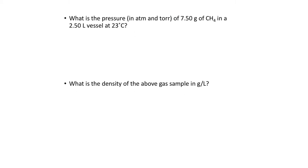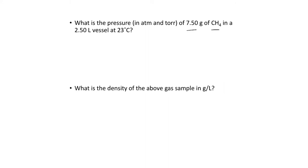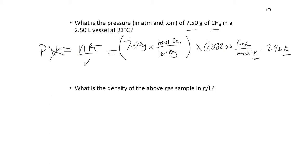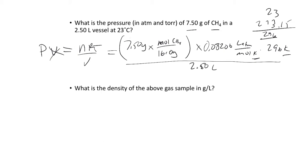We have a couple of examples. What is the pressure of 7.5 grams of CH₄ in a 2.5-liter vessel at 23°C? Using PV = nRT, divide by volume: P = nRT/V. So (7.50 g ÷ 16.0 g/mol) × 0.08206 L·atm/(mol·K) × 296 K, divided by 2.50 liters, gives a pressure of 4.56 atm.